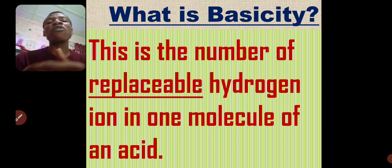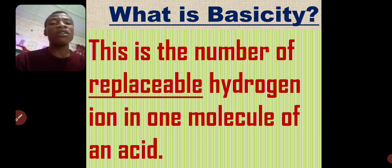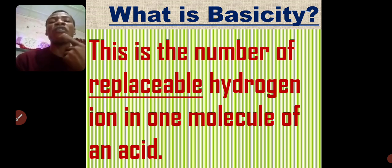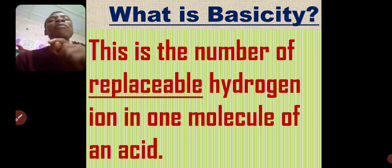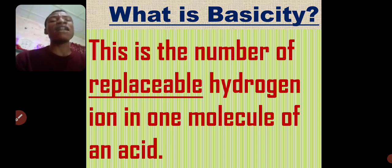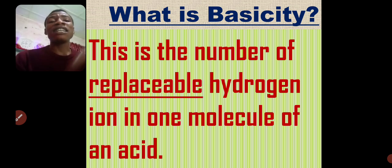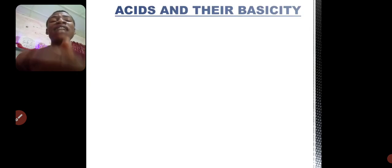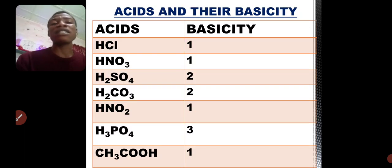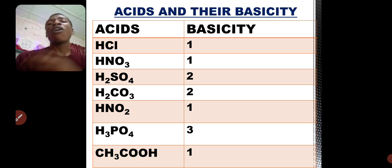We have H2SO4 with a different number of hydrogen than HCl, and H2CO3 with a different number of hydrogen than H3PO4. So we want to know the number of replaceable hydrogen ions in the molecule of that acid — that is what is called basicity of an acid. The number of hydrogen in an acid that can be replaced, or ionized, is called the basicity of an acid.